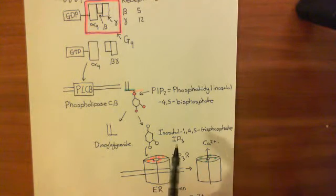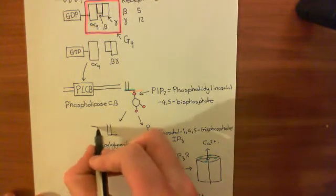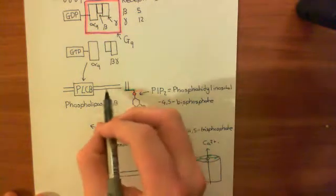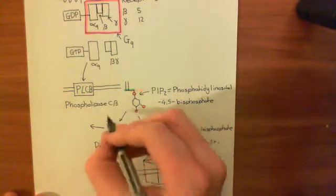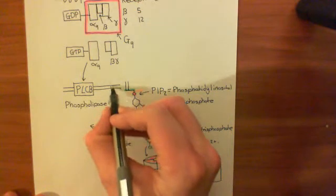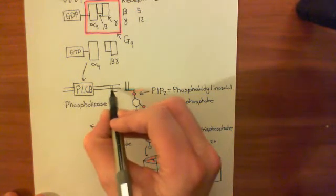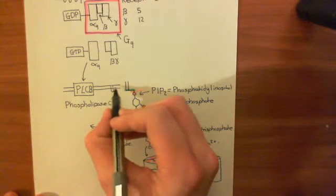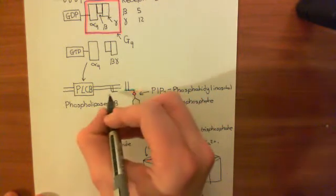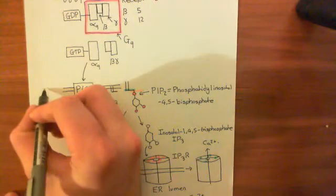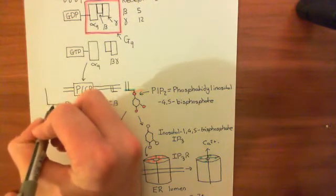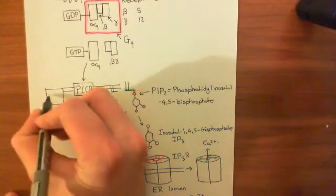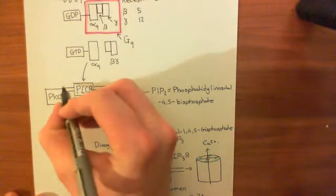We've talked about what IP3 does. Let's talk about what diacylglycerol does. Diacylglycerol stays in the phospholipid bilayer because its hydrophobic tails interact with the other hydrophobic tails of the phospholipids. So it stays in the membrane, and what it does is activate another enzyme which is membrane-bound — and this is the enzyme protein kinase C, a very important enzyme.